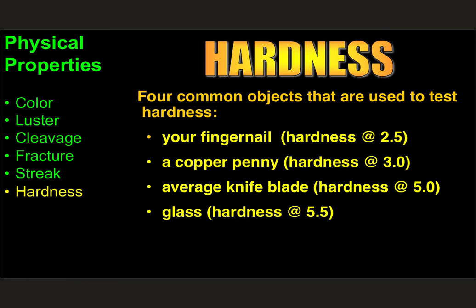Four common objects we often use to test hardness: your fingernail is about 2.5, a copper penny is about 3, the average knife blade is around 5 (sometimes a little harder depending on the steel), and glass has a hardness of about 5.5. There are lists online with many more. So to summarize the major physical properties: color, luster (how light hits it), cleavage (how does it break?), fracture (does it just break randomly?), streak (what color does it make on unglazed porcelain?), and hardness (how resistant is it to being scratched?).